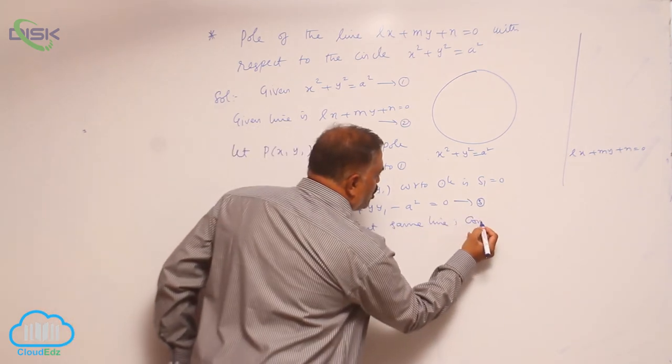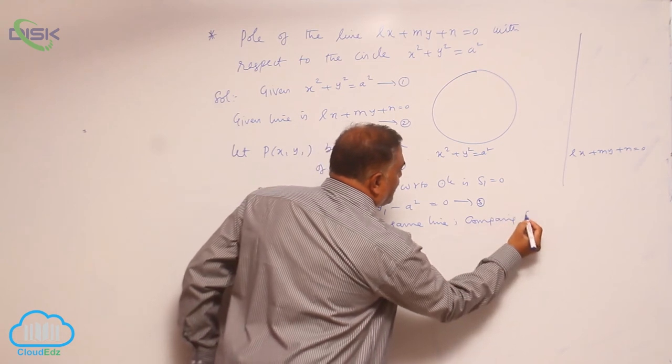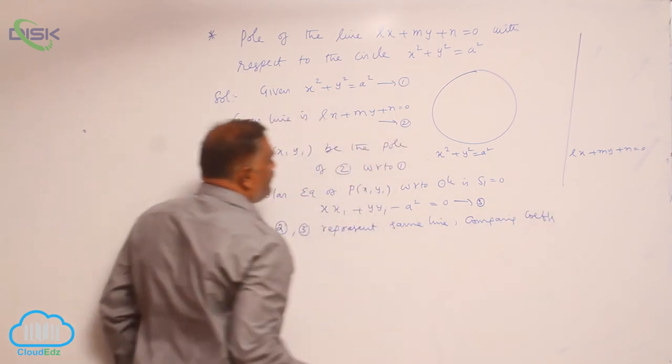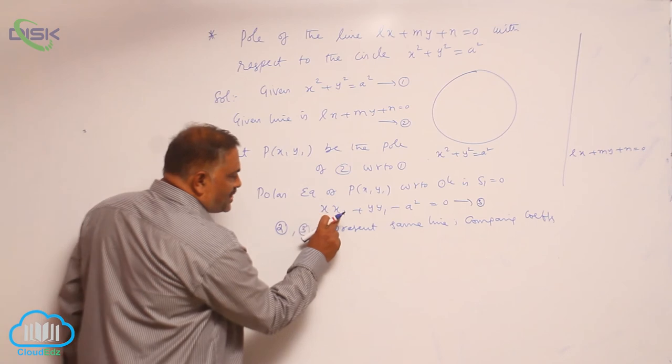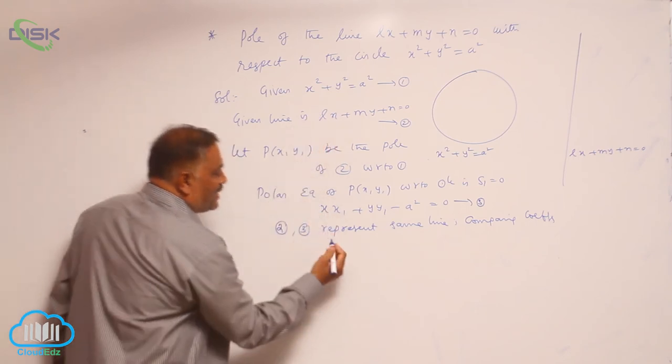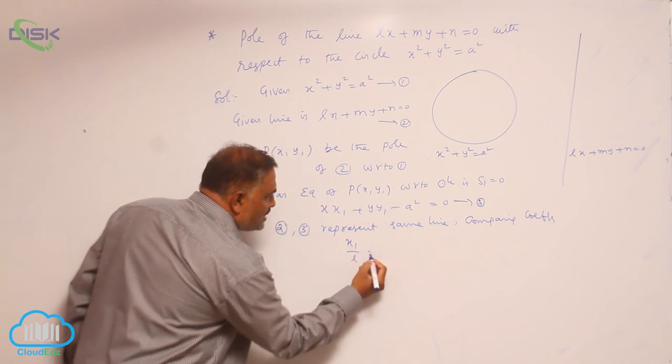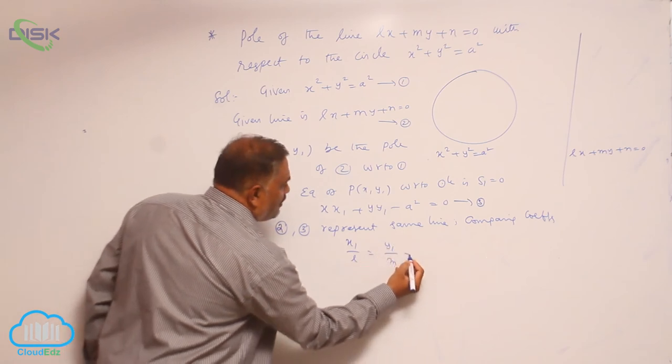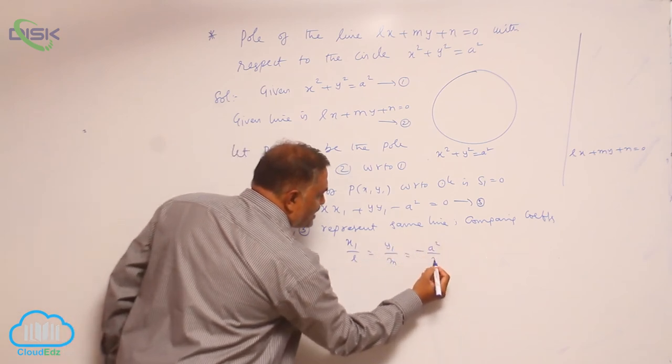Now, comparing coefficients. The x coefficient is x₁ here, the x coefficient is L here. So, x₁/L = y₁/m = -a²/n.